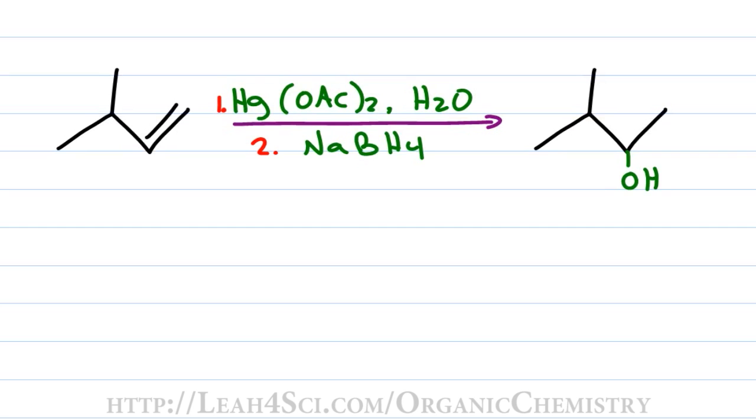Oxymercuration-demercuration is an alkene addition reaction where the pi bond reacts with mercuric acetate and water to get mercury and an alcohol group attached to the carbons, followed by a reduction using sodium borohydride to kick out the mercury. This reaction is regioselective because it follows Markovnikov's rule where the OH adds to the more substituted carbon.